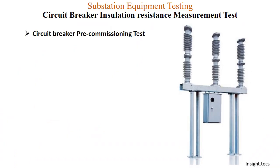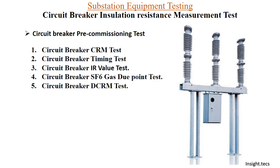What are the different kinds of circuit breaker pre-commissioning tests? There is the breaker CRM test, timing test, IR value test, and if the medium is SF6 gas, then we can measure the SF6 gas dew point test. The last one is the dynamic contact resistance test, also known as DCRM test.